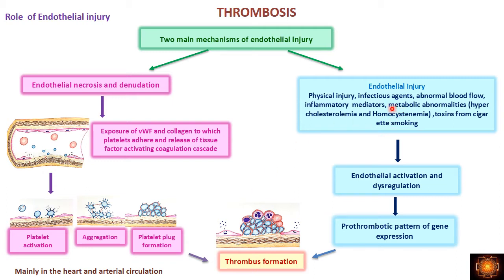Similarly, when there is endothelial injury due to physical injury, infectious agents, abnormal blood flow, inflammatory mediators, metabolic abnormalities like hypercholesterolemia and homocystinemia, or toxins from cigarette smoking, this causes endothelial injury. When there is endothelial injury, activation and dysregulation of endothelial cells occurs, leading to a prothrombotic pattern of gene expression. Normally they have anticoagulant properties, but when activated or dysregulated, they develop prothrombotic gene expression leading to thrombus formation.